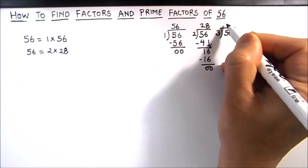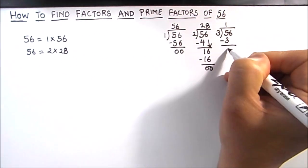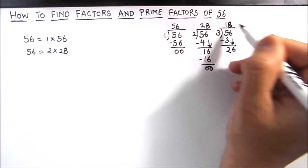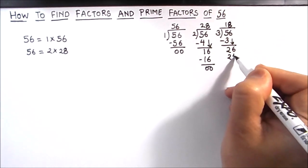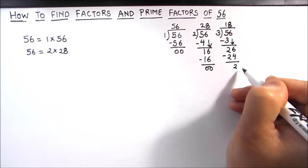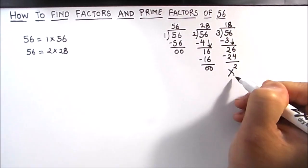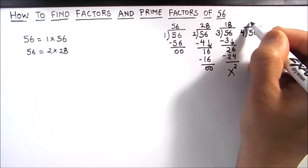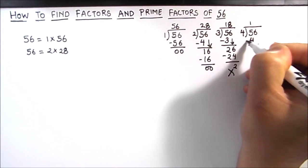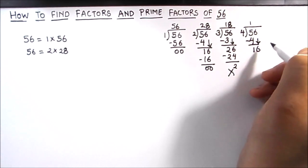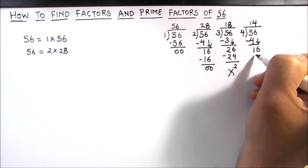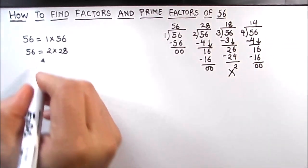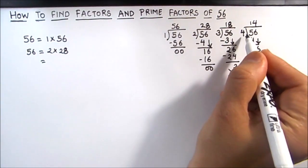3 times 1 is 3 and 2 is remainder, then we'll drop down 6. So 3 is not a factor of 56. Next we'll divide 56 by number 4. 4 times 1 is 4 and then we'll drop down 6, so 4 times 4 is 16. So 4 is a factor of 56. We got two factors as 4 and 14, so 4 times 14 is 56.